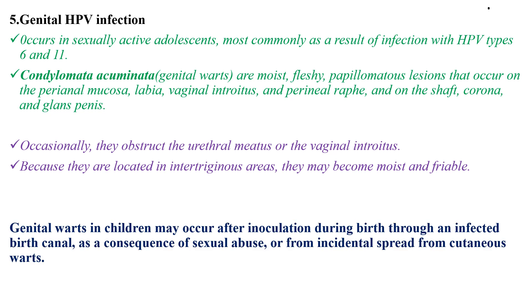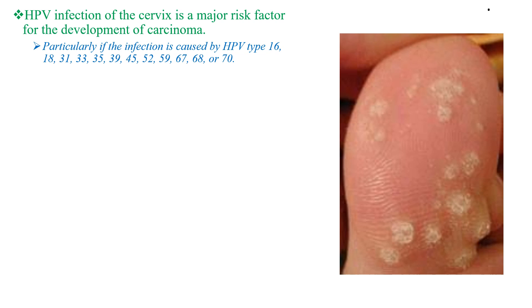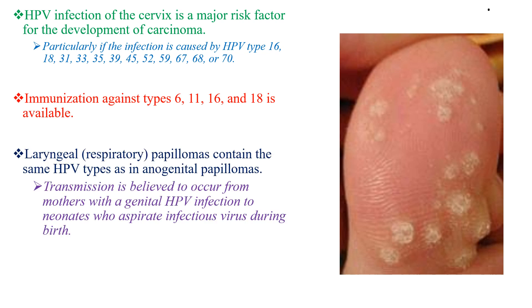Genital warts in children may occur after inoculation during birth through an infected birth canal, as a consequence of sexual abuse, or from incidental spread from cutaneous warts. HPV infection of the cervix is a major risk factor for the development of carcinoma. Immunization against HPV types 6, 11, 16, and 18 is currently available. Laryngeal or respiratory papillomas contain the same HPV types as anogenital papillomas, transmitted from mothers with genital HPV infection to neonates who aspirate infectious virus during birth.